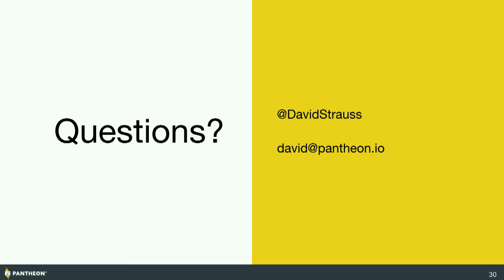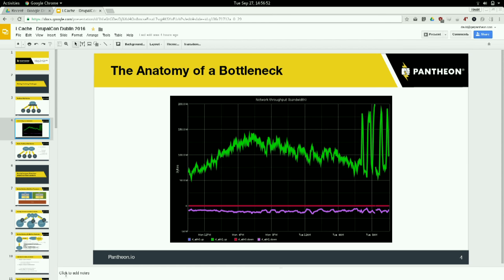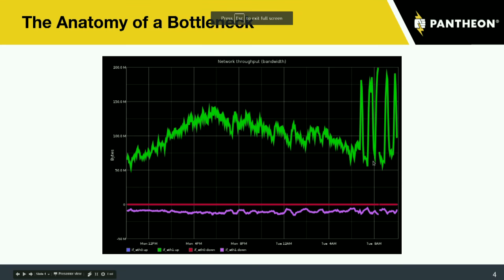Absolutely. When we look at the data links — you can see the purple line, the distance below the red line is inbound traffic to the node, and the green line is outbound traffic. You can see that the cache reads, which is the green area, are massively, massively outstripping the cache writes for something like Redis.